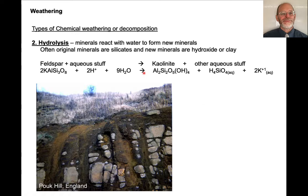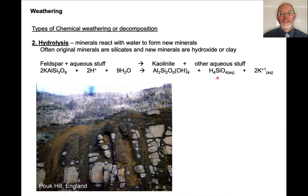Hydrolysis is simply reacting a mineral with water to form new minerals. A really common example is taking potassium feldspar with water — some of it is just water, but there can be a positively charged hydrogen ion. That can react to form kaolinite, which is a clay, and some other stuff dissolved in water: silicic acid and potassium in solution.